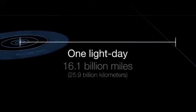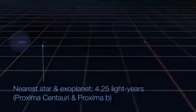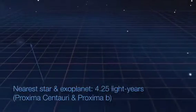One light day is 16.1 billion miles. One light year means 5.8 trillion miles. The nearest star, Proxima Centauri, is 4.25 light years away.